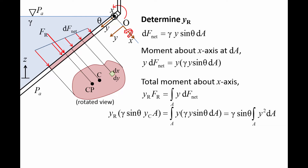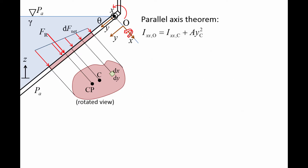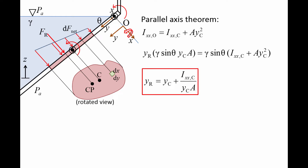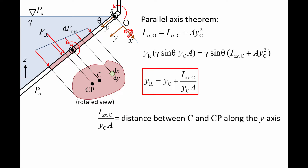We are left with the integral of Y squared DA. This quantity is the second moment of area about the x-axis, denoted as IXXO. So the right side of the equation becomes gamma sin theta times IXXO. It can be difficult to calculate the second moment of area about an arbitrary x-axis, but for common shapes it is easy to calculate the second moment of area about a parallel axis that passes through the centroid, which we call IXXC. The parallel axis theorem relates IXXO and IXXC. Plugging in the expression for IXXO, we find that YR is equal to YC plus IXXC divided by YC times A. The second term, IXXC divided by YC times A, is the distance between the centroid and center of pressure along the Y-axis.